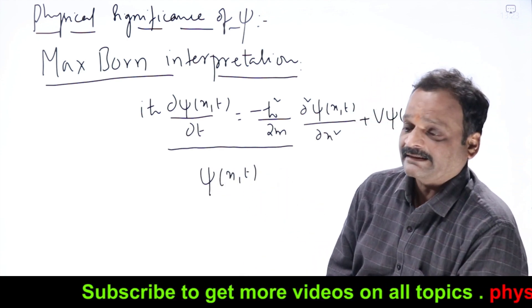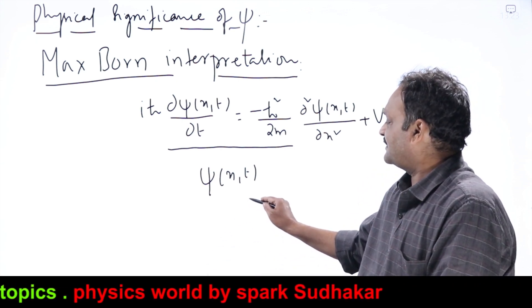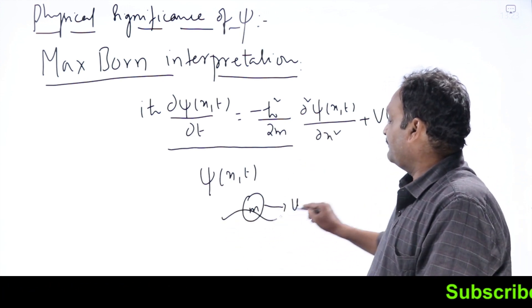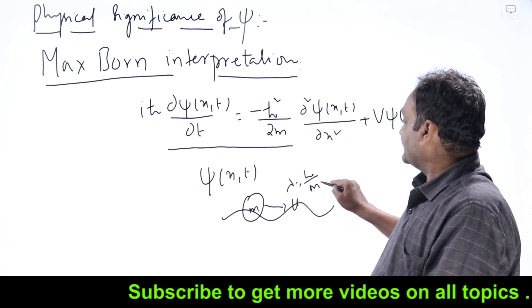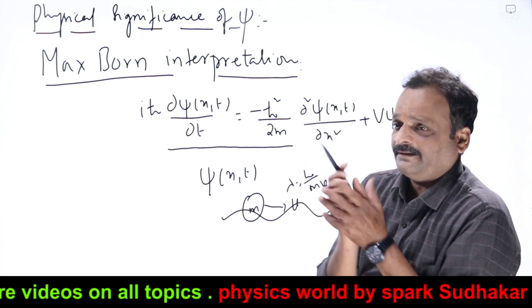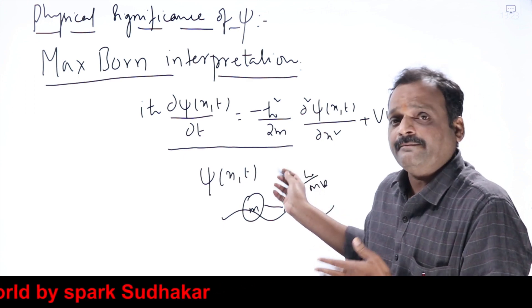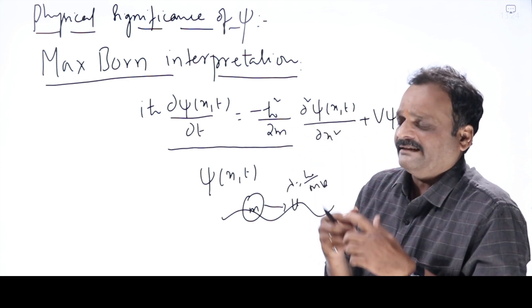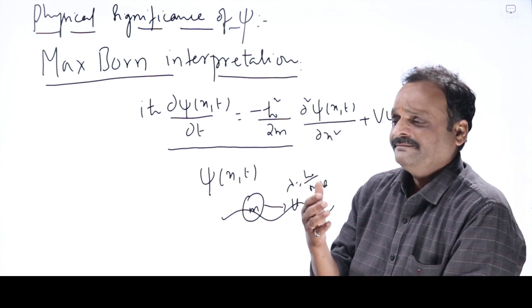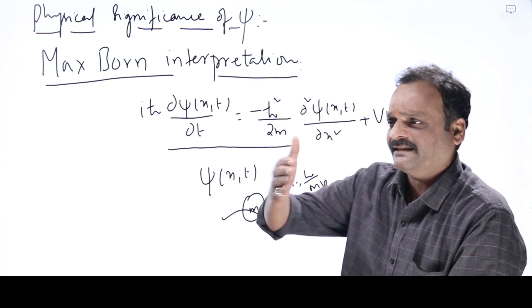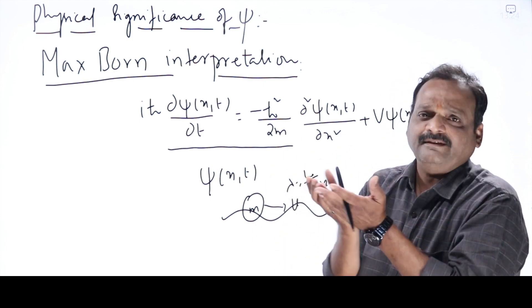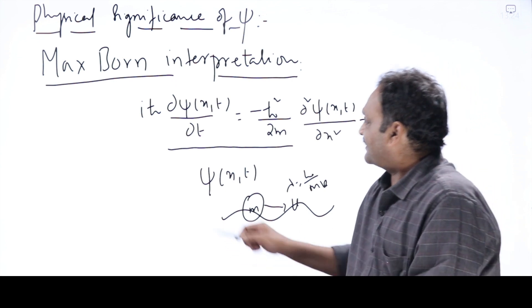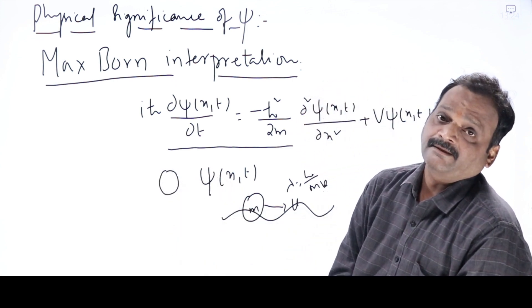De Broglie's concept says every material particle of mass m moving with velocity v will be associated with a wave whose wavelength is given by λ = h/mv. Experimental confirmation has come for this formula. But when we try to imagine how an electron behaves like a wave — in a wave, something has to move up and down or back and forth, some periodicity should be there — neither de Broglie nor Schrödinger could initially understand what makes an electron behave like a wave.